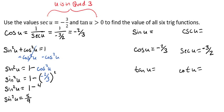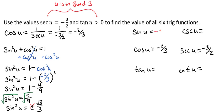That should say minus, not plus — 1 minus 4 over 9 is how we get 5 over 9. Taking the square root of both sides gives us sine of u equals plus or minus radical 5 over 3. However, because we're in the third quadrant, sine is not positive, so we take the negative value. Our sine of u is negative radical 5 over 3.